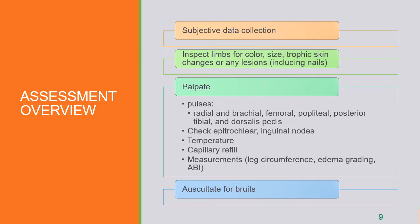Moving on to assessment — collect subjective data first and then inspect. Look at the limbs for color, size, any trophic skin changes or lesions including the nails. Palpate the pulses, check for nodes, and assess temperature, color, and condition of the skin — is it diaphoretic, moist, or dry? Check capillary refill. You can also do measurements like leg circumference, edema grading, or ankle-brachial index. Auscultate for bruits over any vessel — abdominal, femoral, or carotid — using the bell of your stethoscope.